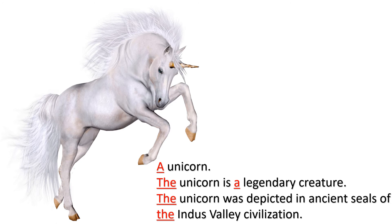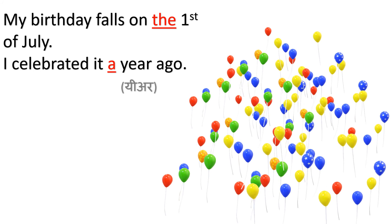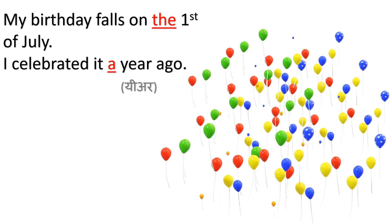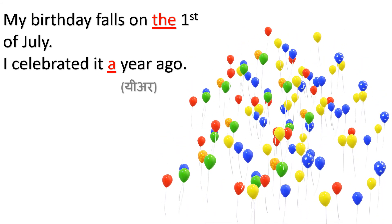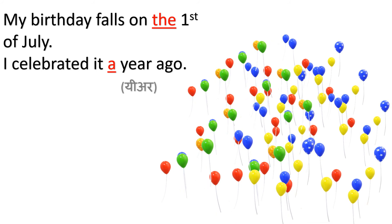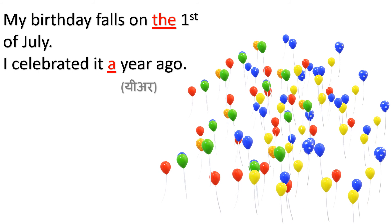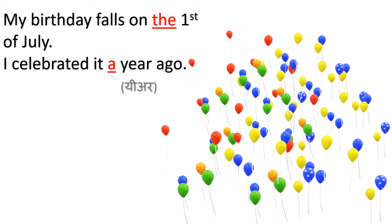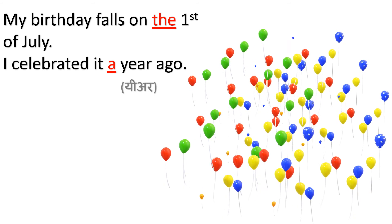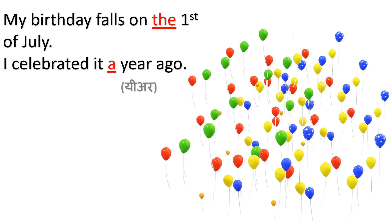'The' is used before civilizations, like the Indus Valley civilization, the Harappan civilization. 'My birthday falls on the 1st of July.' 'The' is used before cardinal numbers — 1st, 2nd, 99th, 10th — like this. 'I celebrated it a year ago.' 'A' is used before 'year' because its pronunciation starts with a consonant sound — it is pronounced 'year'.